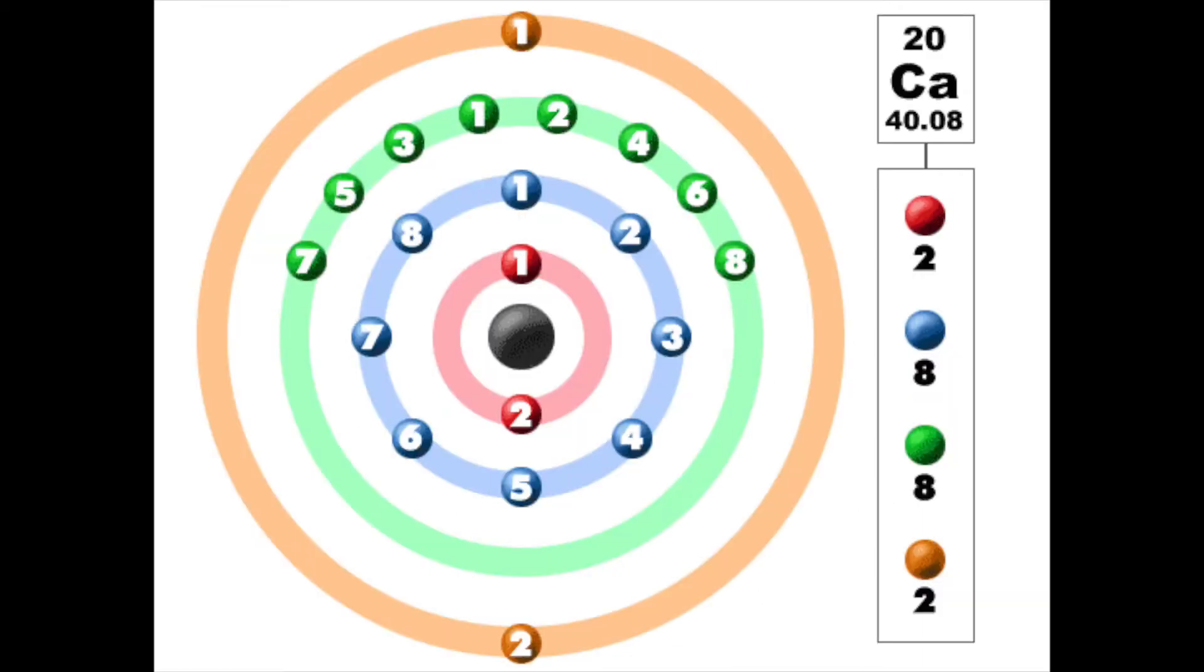Calcium, for example, as I mentioned earlier, has twenty electrons, so it goes two in the inner shell and eight, eight, and then two again.